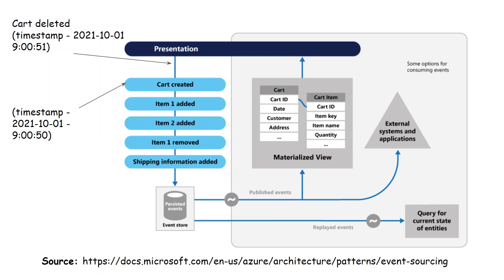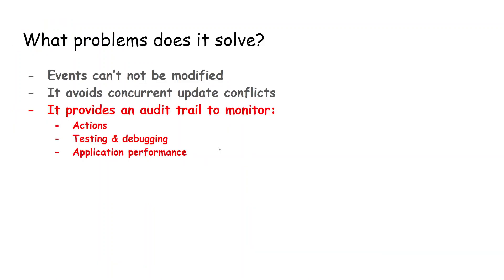If we want to query the current state, we can replay all the events to do so. The pattern also provides an audit trail to monitor actions or events, and it helps with testing and debugging to understand where the system goes wrong and to monitor application performance.